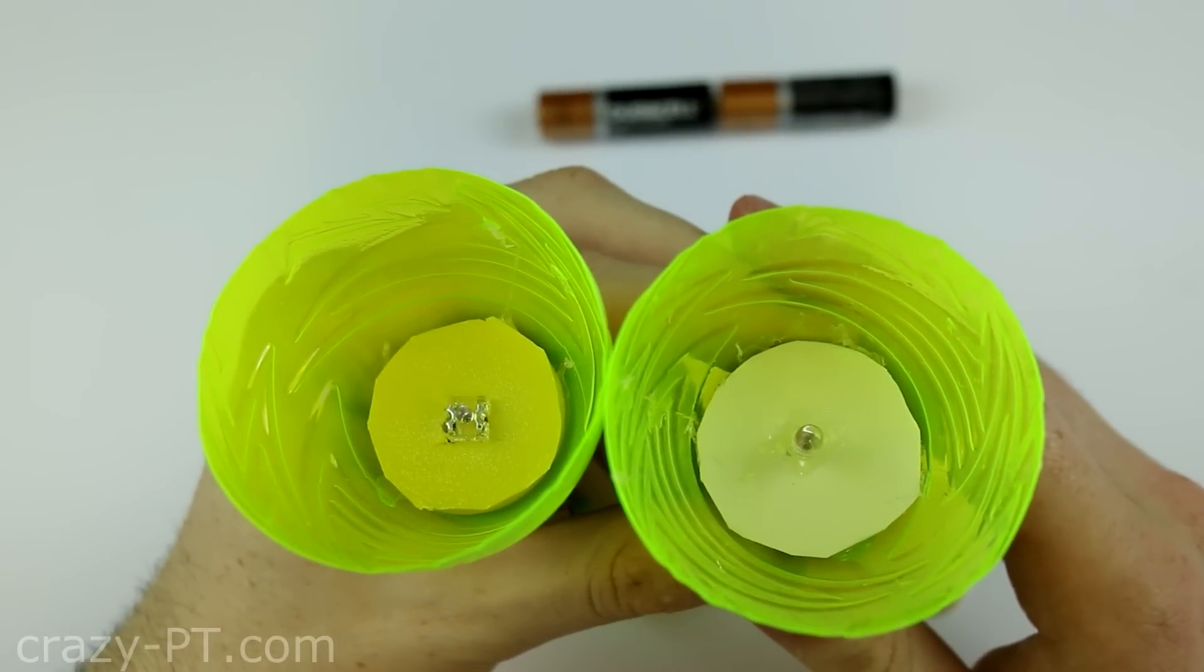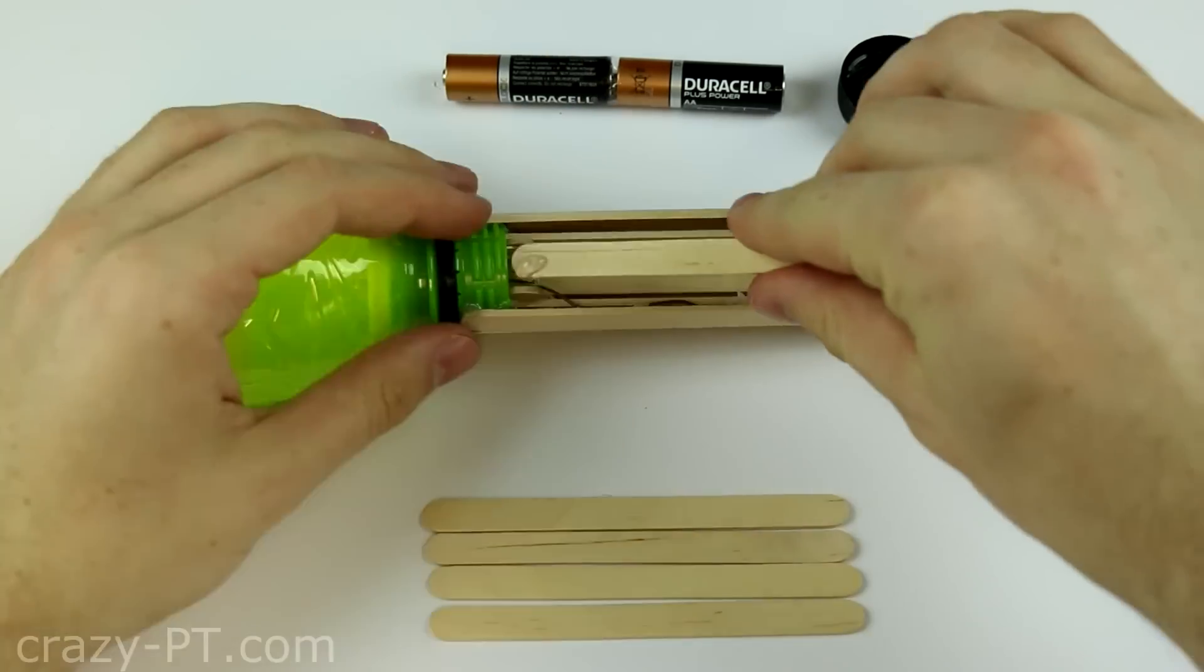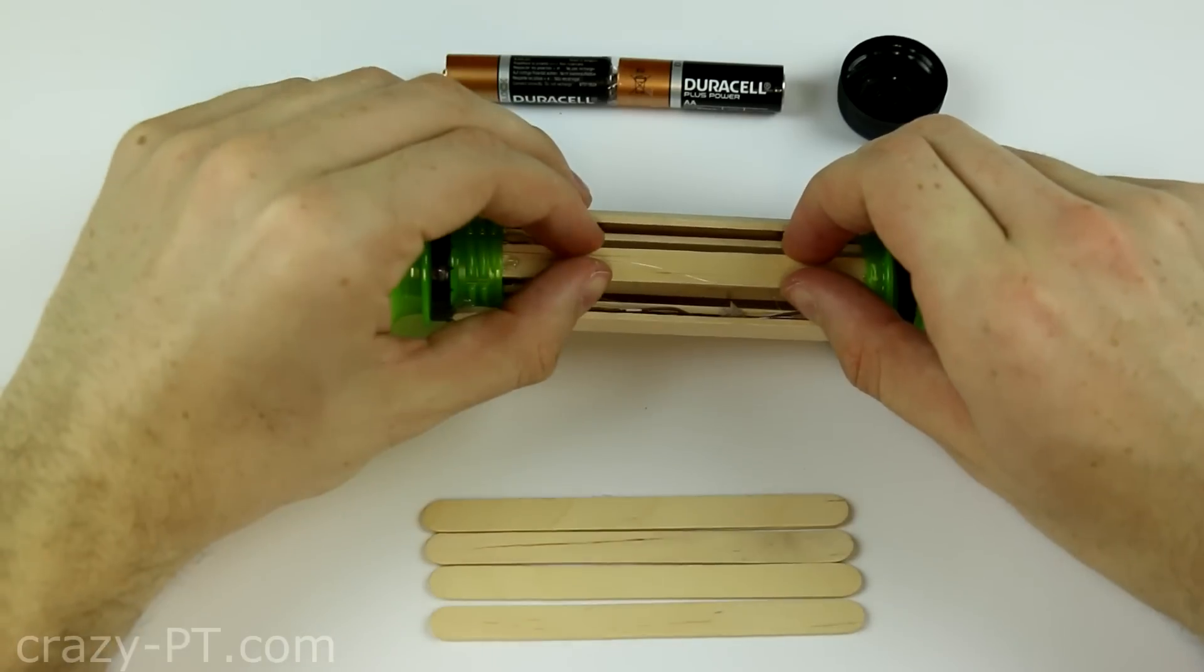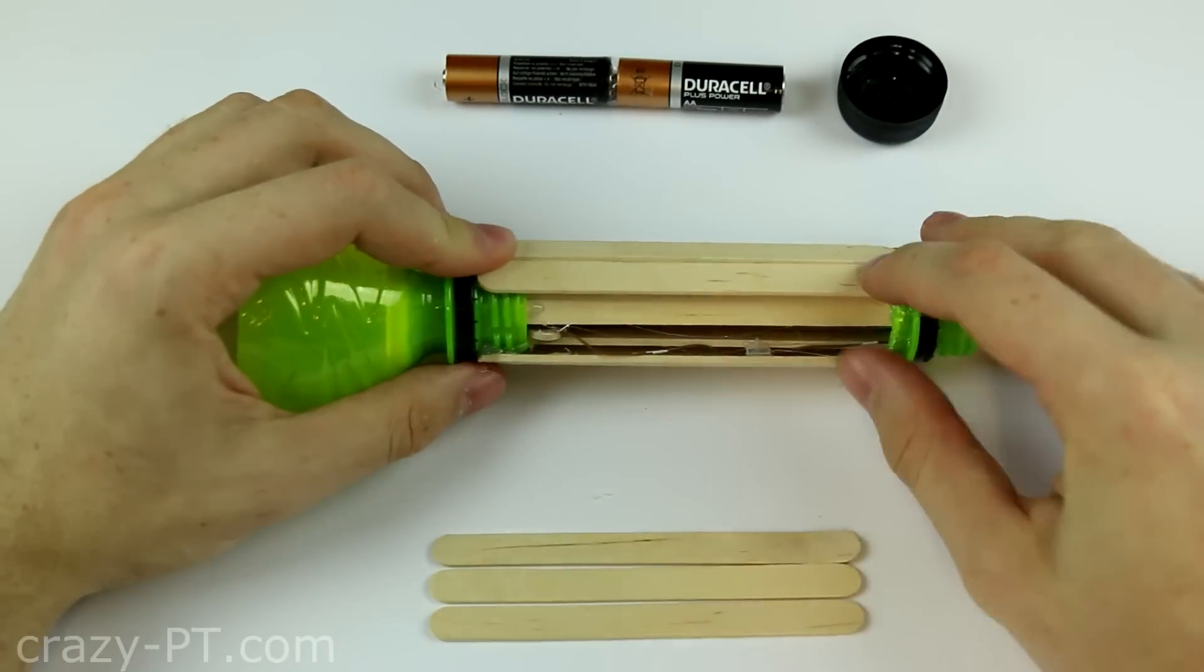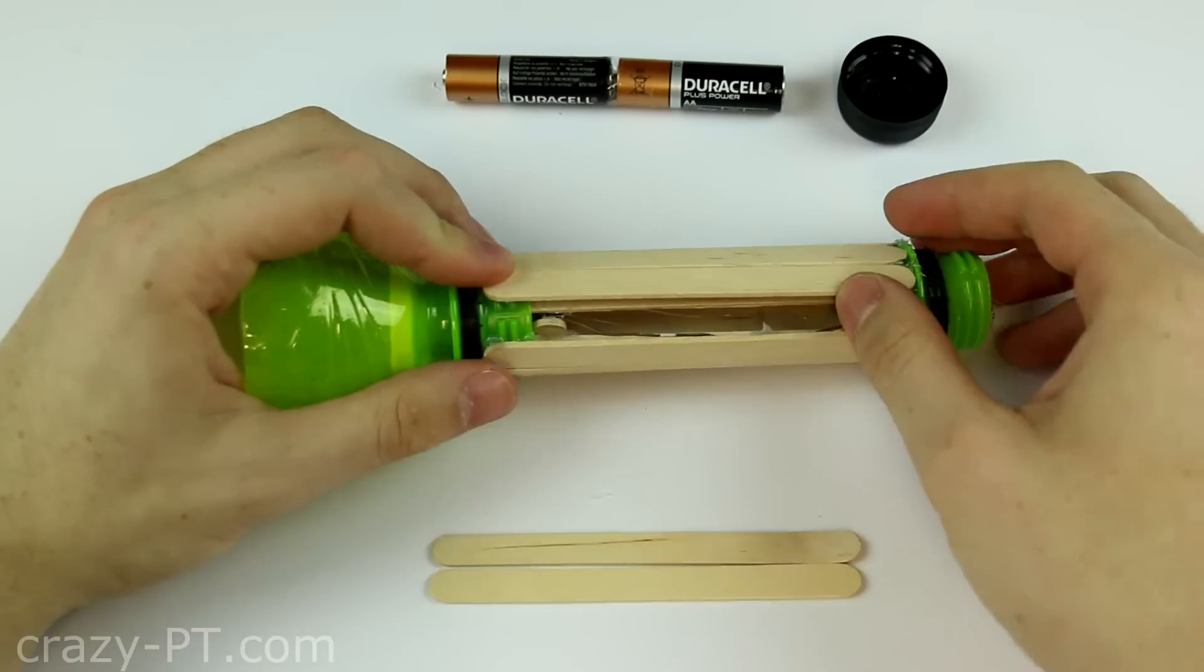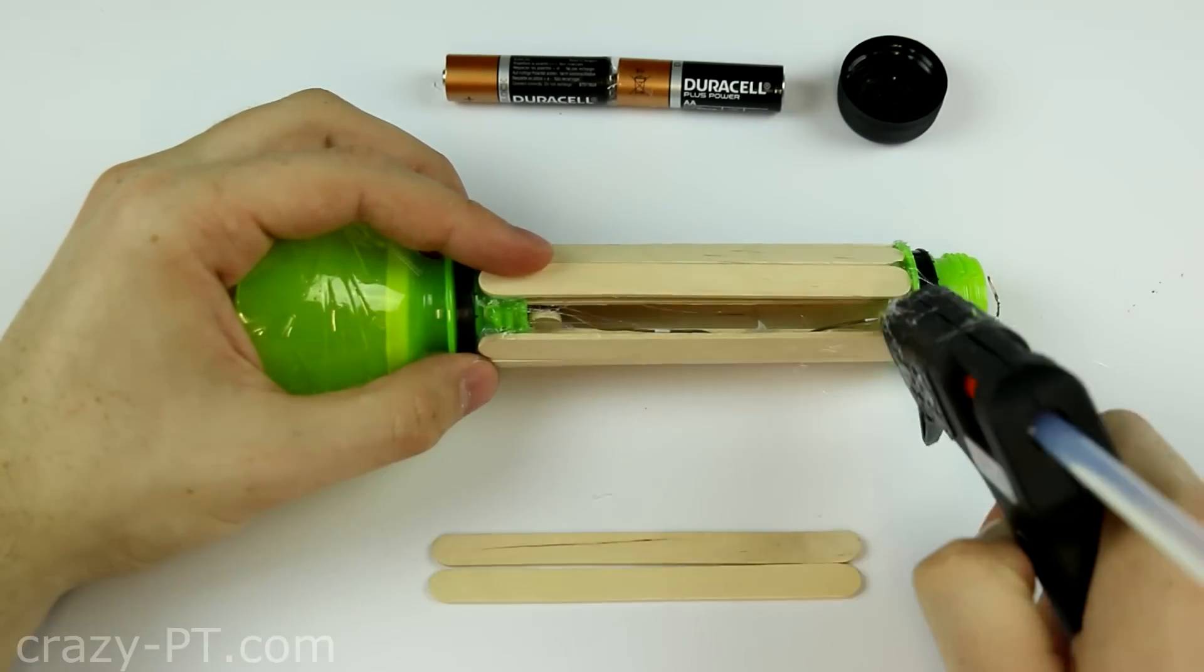Now take the batteries out and glue one stick like this. And make sure that the stick is glued on the inner top to leave space for the batteries. And finally glue the rest of lolly sticks around and the project is done!